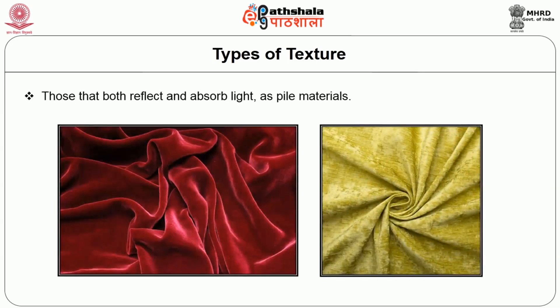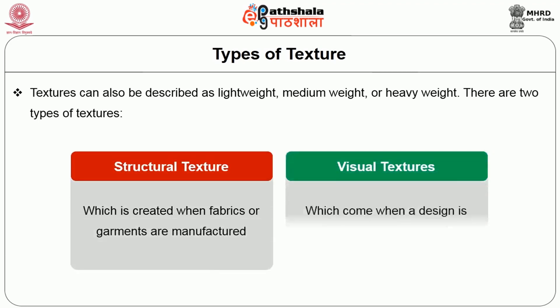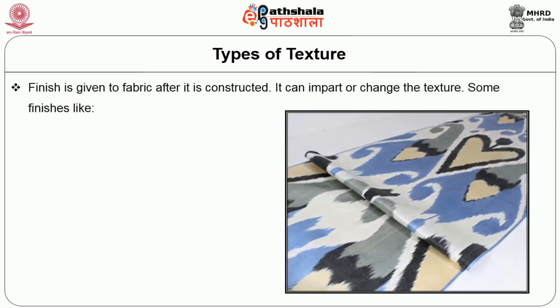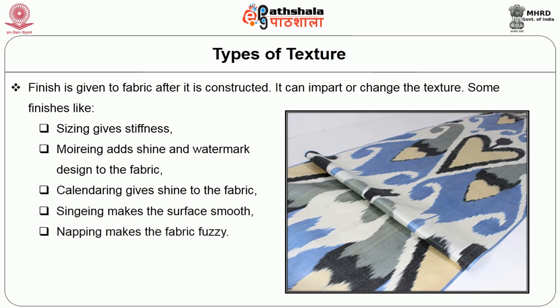Those that both reflect and absorb light are pile fabrics, velvet and satin. Textures can be described as lightweight, medium weight or heavy weight. They can also be divided into two different ways: structural texture and added visual texture. Structural texture refers to the fabric or the garment whereas the visual texture refers to the print design. Finish is given to the fabric after it is constructed. It can also impart or change the structure. Finish also alters the texture of the fabric. Some finishes like sizing give stiffness. Moiré adds shine and watermark design to the fabric. Calendering also gives shininess to the fabric. Singeing makes the surface smooth and napping makes the fabric fuzzy.